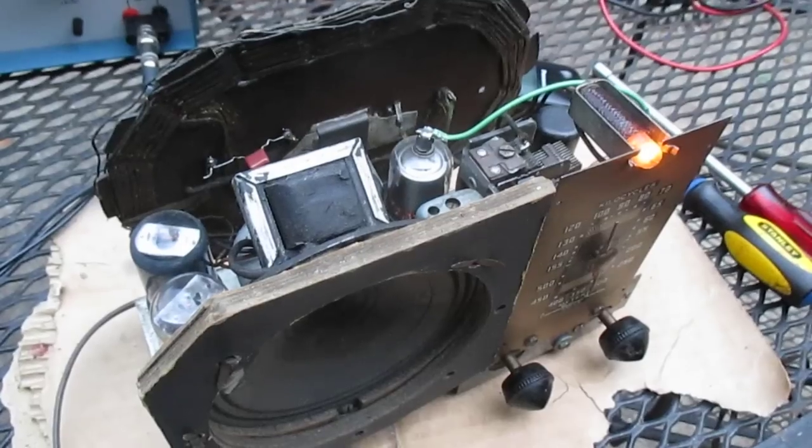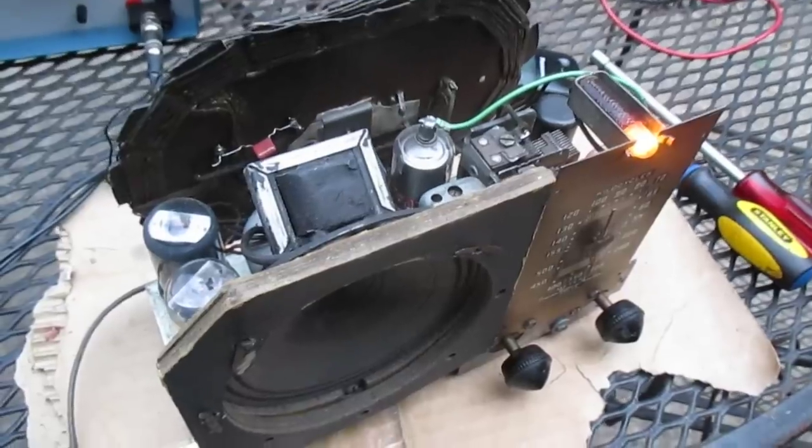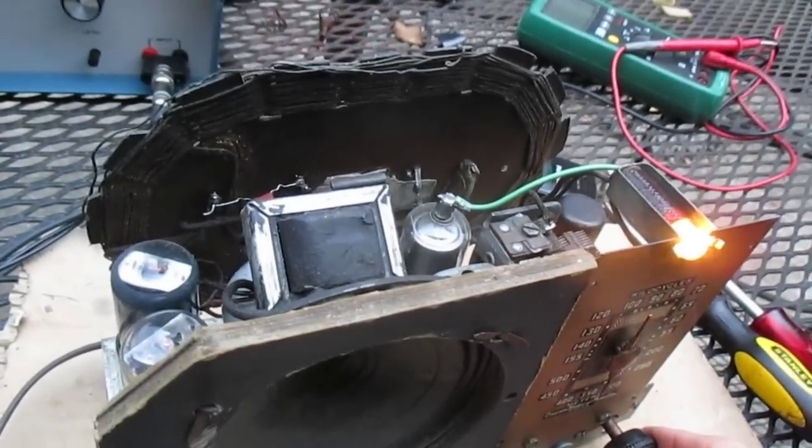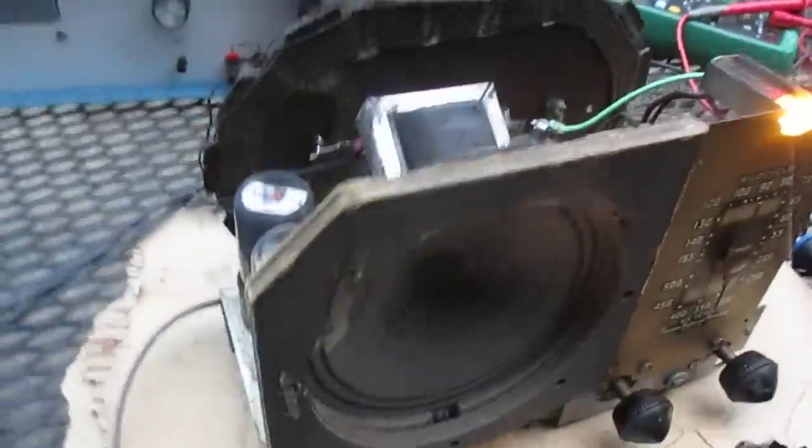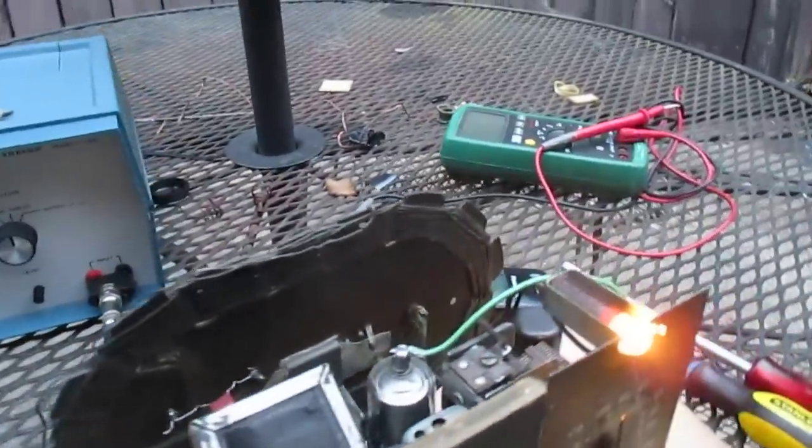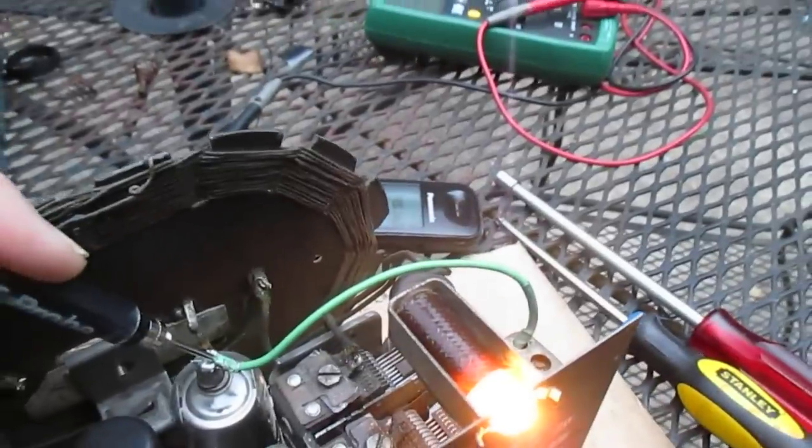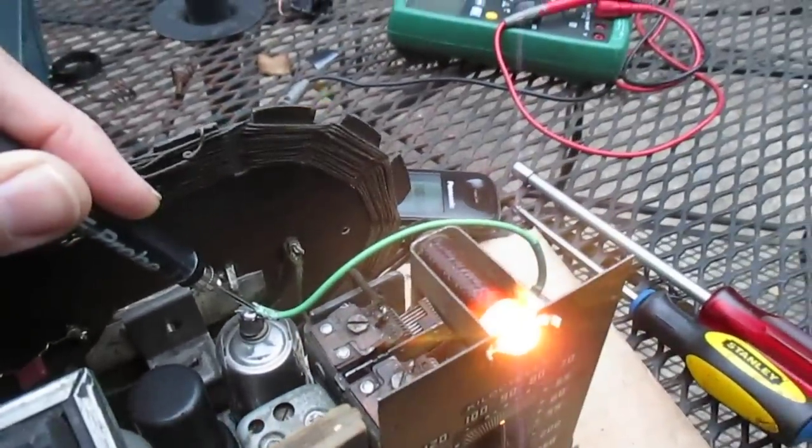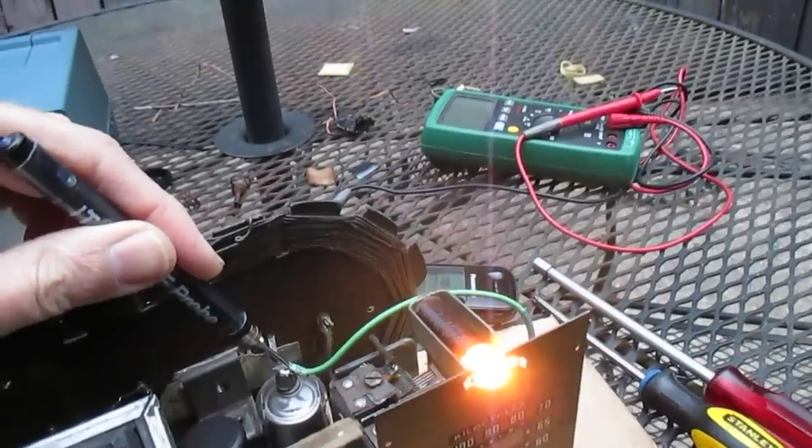Okay this is a five tube Emerson hot chassis set, one side of the line connected directly to the chassis. Now let's turn our signal tracer on and touch the grid cap of the IF amplifier tube. And see it just loads it down and you lose reception from the radio and you get nothing on the signal tracer either.